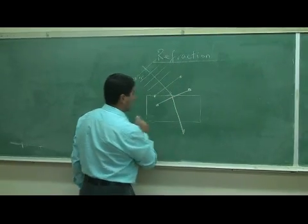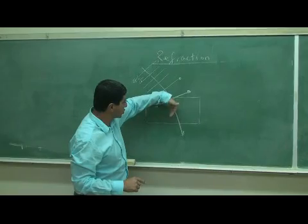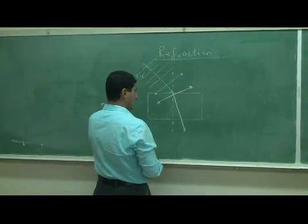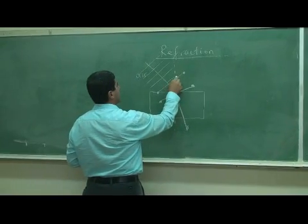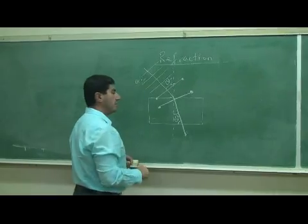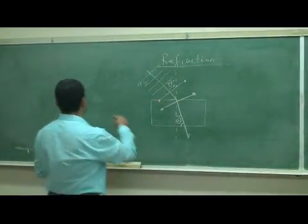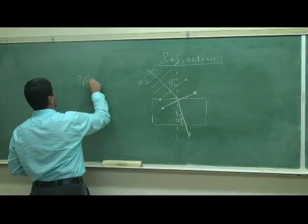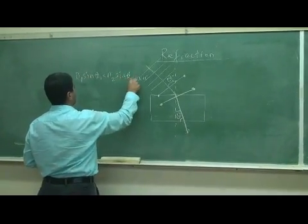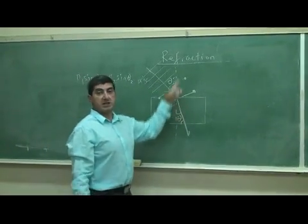So the light beam will bend towards the normal. If we draw a normal line to the surface, this angle is the incidence angle, and this angle is the refracted angle. The equation for this is known as Snell's Law. N1 sine theta1 is N2 sine theta2, whereas N is the index of refraction of the two mediums.